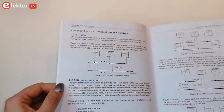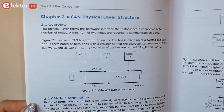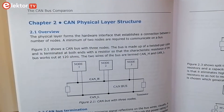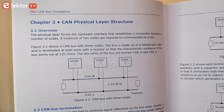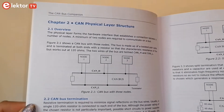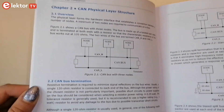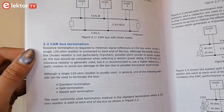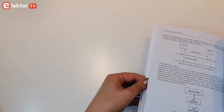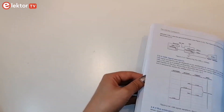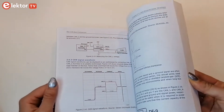Chapter 2 is a great resource for anyone who wants to know more about the physical layer of CAN bus systems. It delves into the specifics of CAN bus termination, data rate, cables, connectors, transceivers, and more.